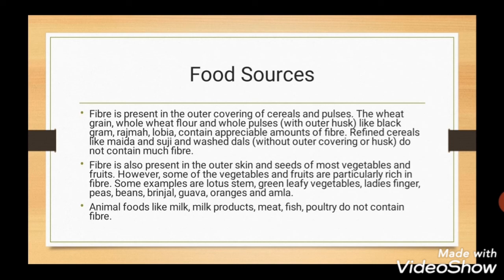Food sources of fibers. Fiber is present in the outer covering of cereals and pulses, and in the outer skin and seeds of vegetables and fruits. You can see other examples on screen. Animal foods like milk, meat, fish and poultry do not contain fibers. This was all about carbohydrates.